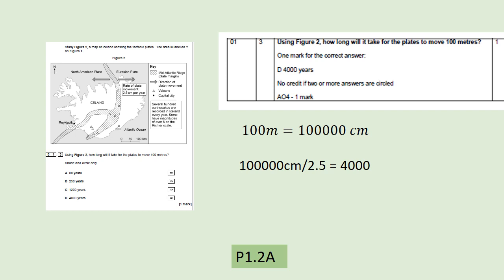Question 1.3 is a maths question. The rate of movement is 2.5 centimetres per year, and you're asked how long it would take to move 100 metres. The problem is that this is in centimetres and the distance is in metres, so the first step is to convert metres into centimetres by multiplying by 100. Once you have the number of centimetres, divide by 2.5 — that equals 4,000 years. The only tricky bit is the conversion of metres into centimetres.